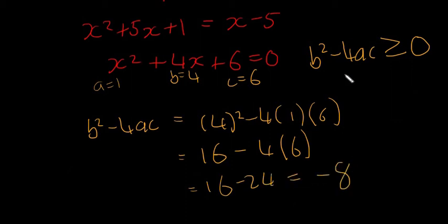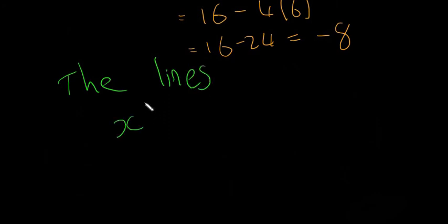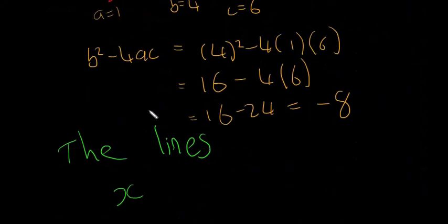This isn't greater than or equal to 0. It's actually less than 0 because it's negative, which means, let me scroll down, and I'm going to write it in green. So I'm going to say the lines, x minus y is equal to 5.